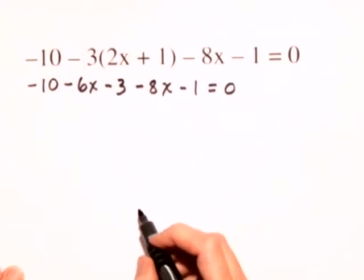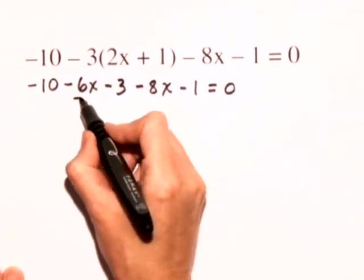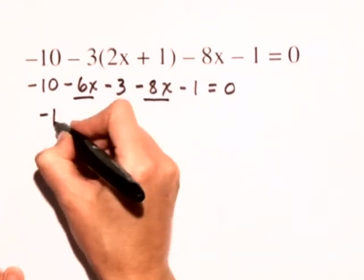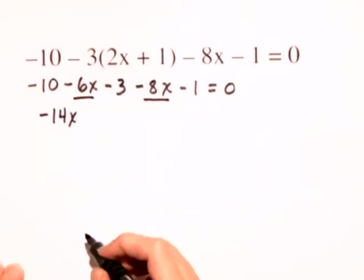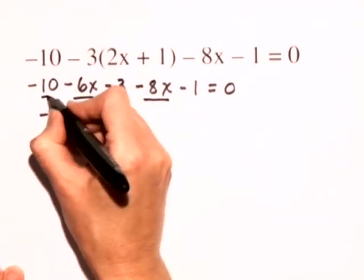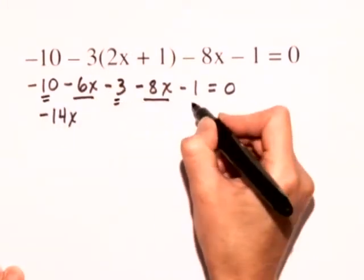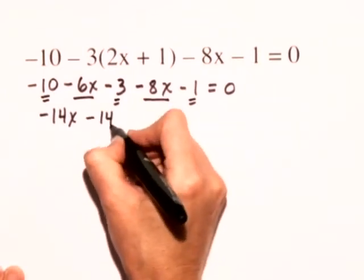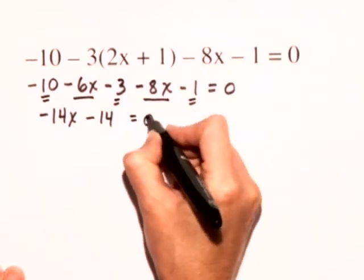Next, we'll combine our like terms. We have negative 6x minus 8x that gives us negative 14x. And for our constants, we have negative 10 minus 3 minus 1. That gives us negative 14 and that's equal to 0.